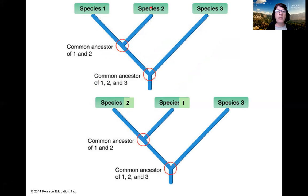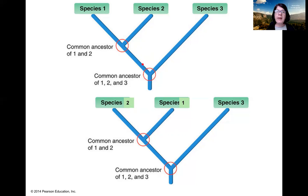One is on the left and two is on the right, or I could write two on the left and one on the right. This will not change the fundamental information the model provides — mainly that species Y is the common ancestor of both species one and species two, and this is the second speciation event that occurred after the first one.